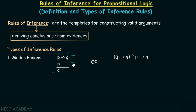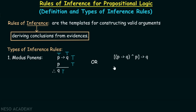We can also write this argument as: p implies q, and p, are the premises, and q is our conclusion. We know that premises always imply the conclusion, and hence we can write this argument in this form.